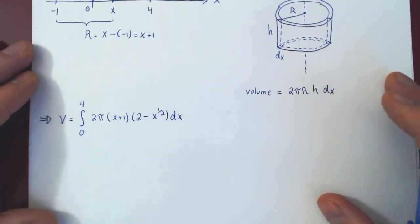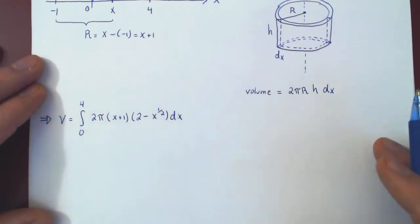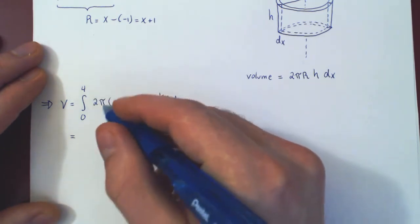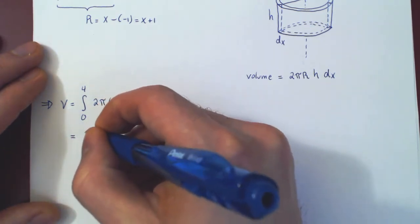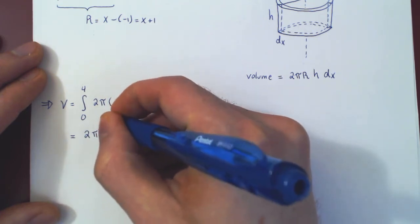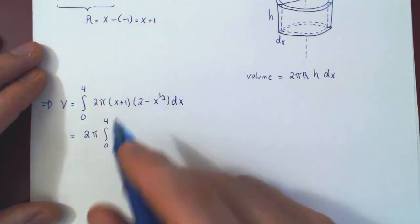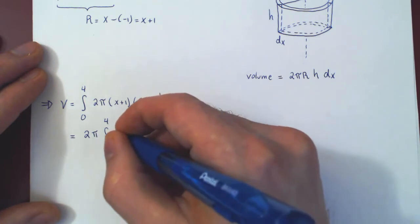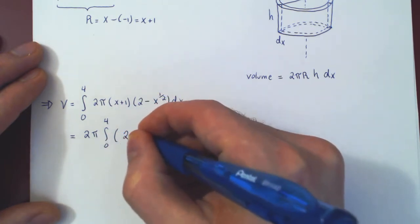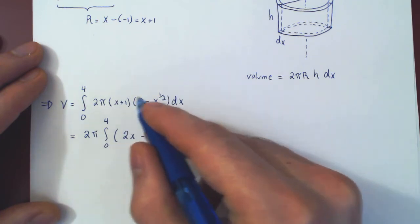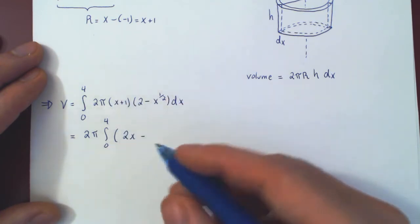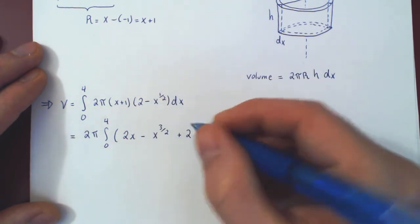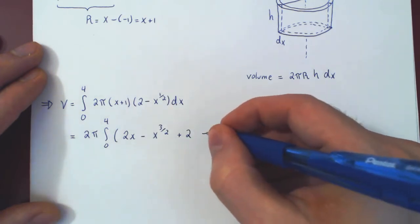Now we apply the fundamental theorem of calculus. The 2 pi is a constant multiple, so factor it out: 2 pi times the integral from 0 to 4. We have a product between two functions of x; we cannot integrate over a product, so we must multiply out. We get: x times 2 is 2x, minus x times x to the 1/2 — adding exponents gives x to the 3/2 — plus 1 times 2 is 2, minus 1 times x to the 1/2, giving negative x to the 1/2.